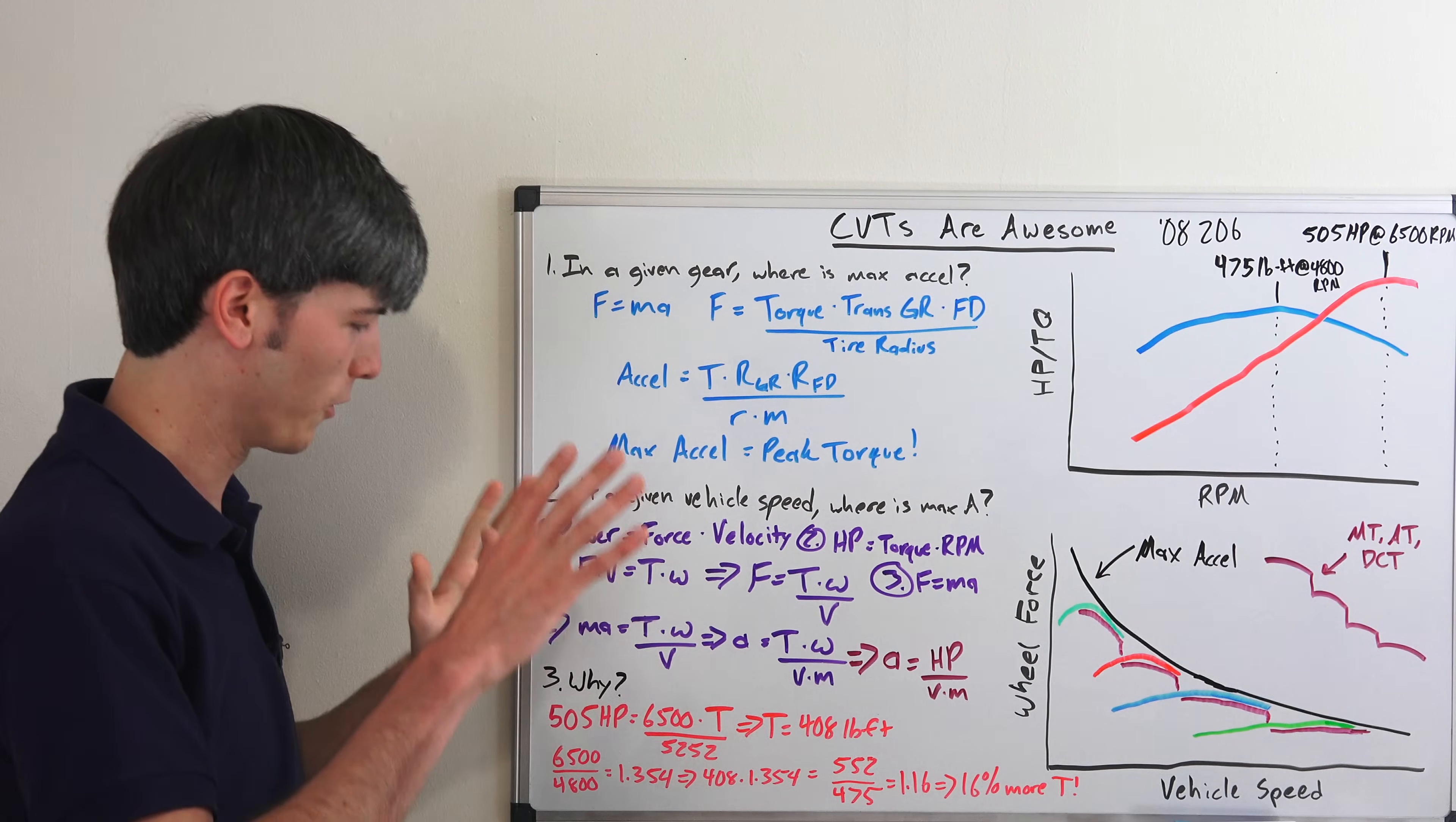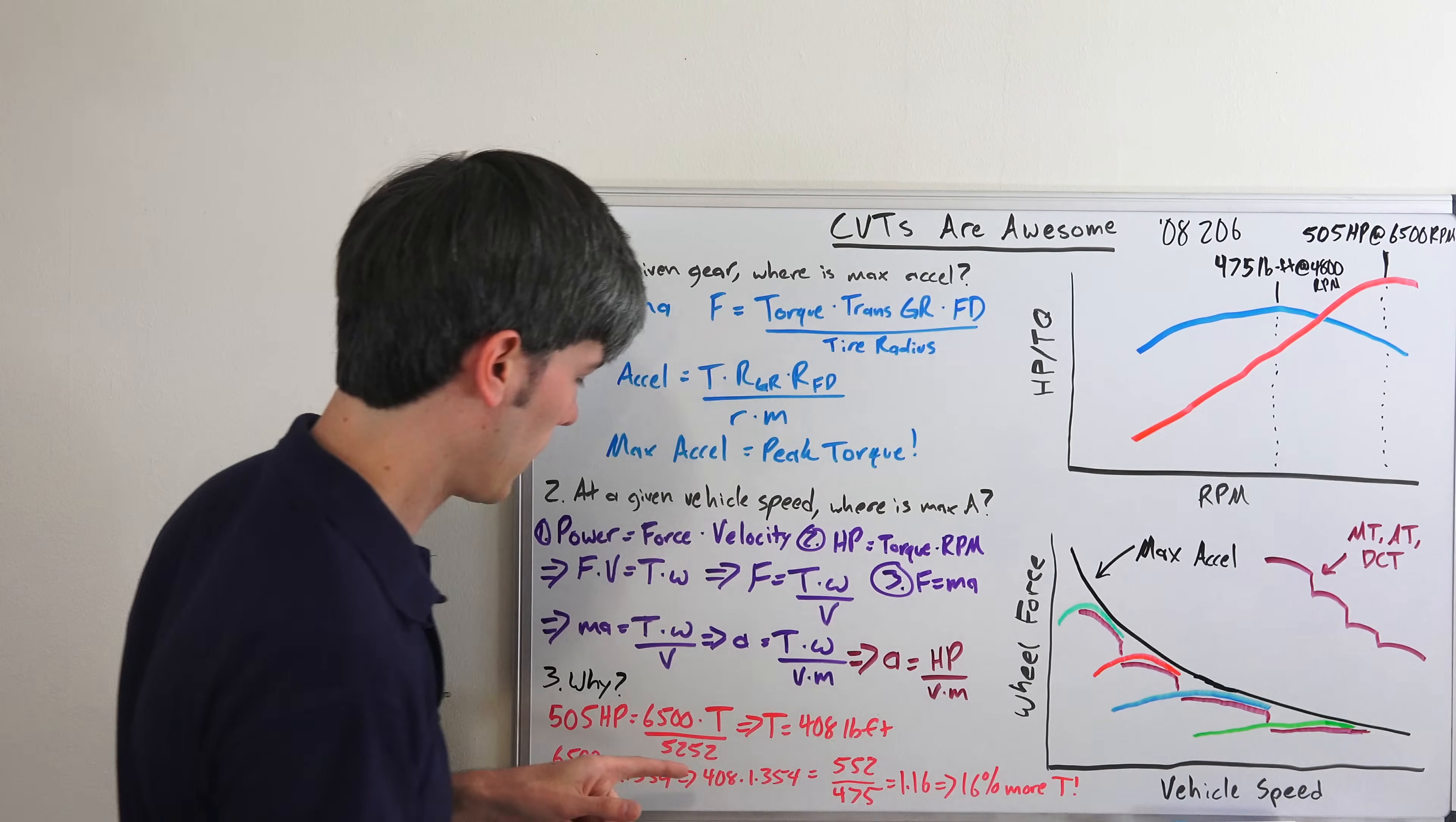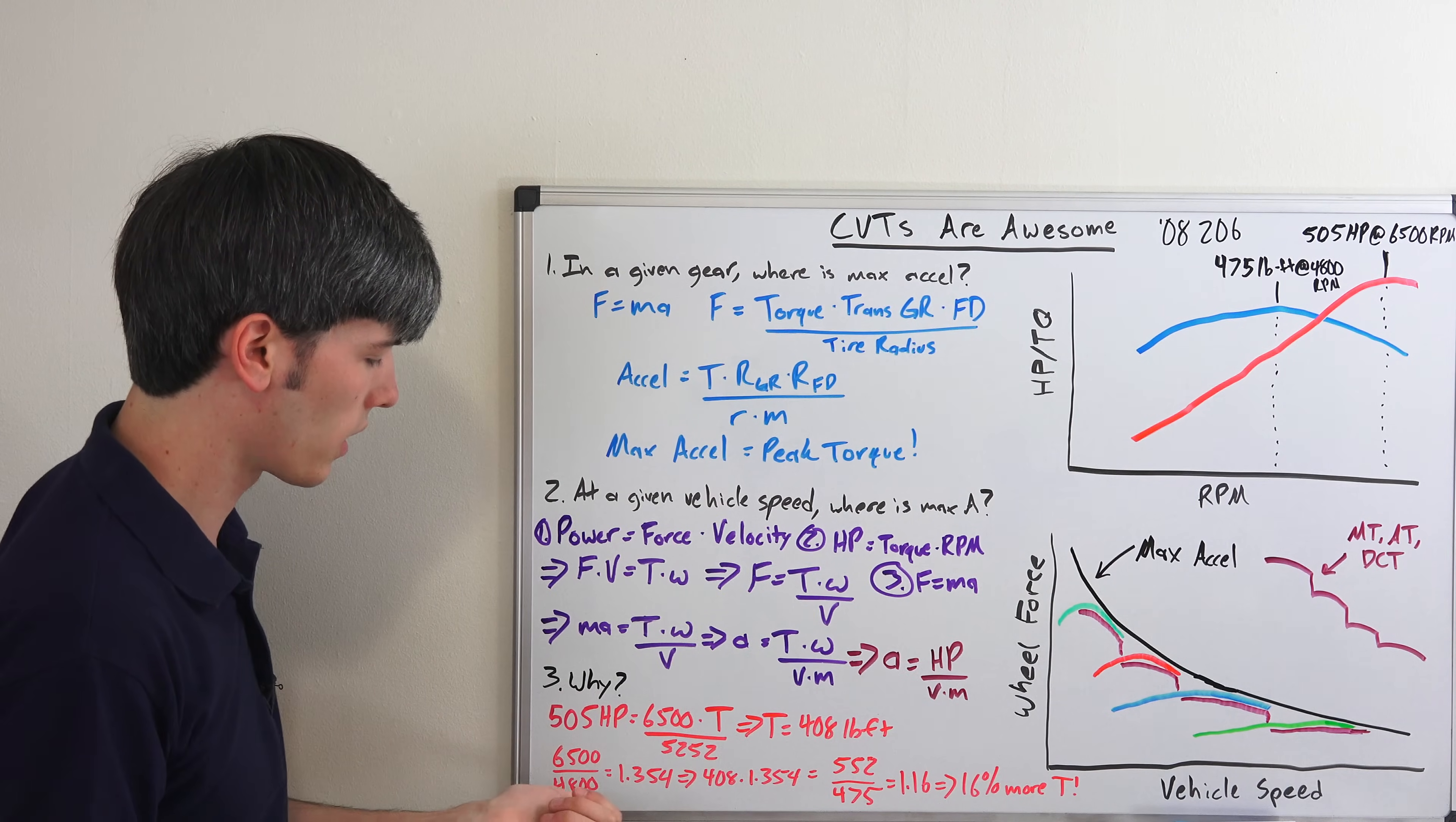Okay, if you're still following - hopefully none of this math is very complicated, it's just simple algebra. You divide a bunch of different equations. So we have 505 horsepower equals 6500 RPM times torque, the torque at that, divided by 5252. So that's how we can figure out torque, and so we have 408 pound-feet of torque right here versus 475 which is our peak. So we're at less torque, but we've got a greater gear ratio. So what's the gear ratio difference?